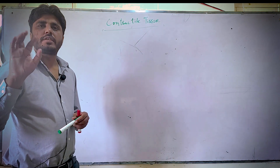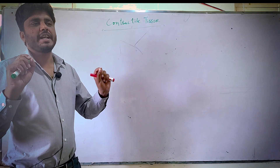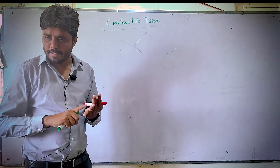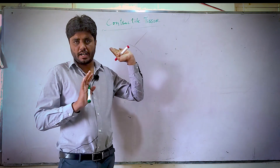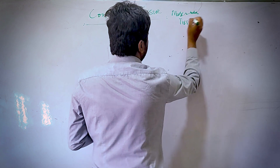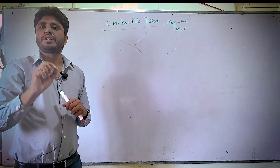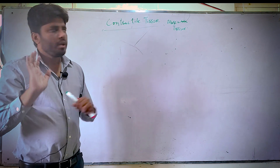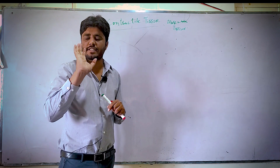The last lecture was about muscular tissue. If somebody asks you about contractile tissue, the first thing that comes to mind is muscular tissue — skeletal muscle, smooth muscle, and cardiac muscle. Contractile tissue is a tissue which has the ability to do contraction and relaxation. All muscular tissues — skeletal, smooth, and cardiac — are known as contractile tissue.